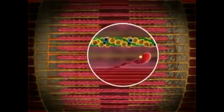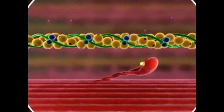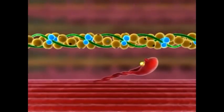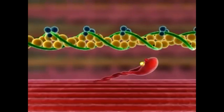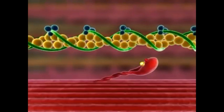The cycle ends when calcium ions are actively transported back to the sarcoplasmic reticulum. Troponin returns to its original shape and allows tropomyosin to glide back over the myosin binding site on actin.